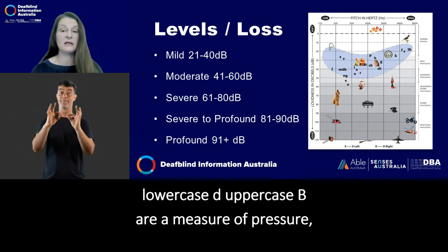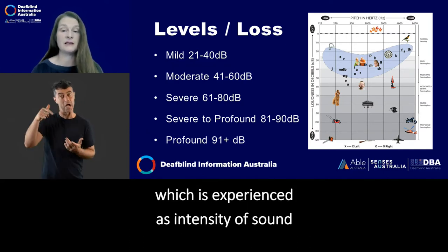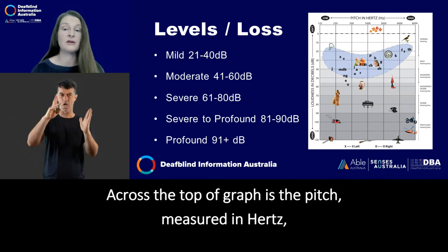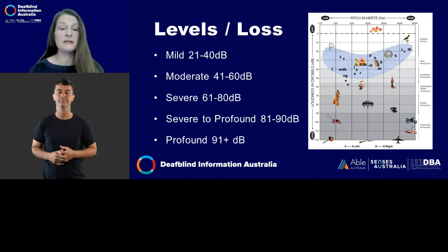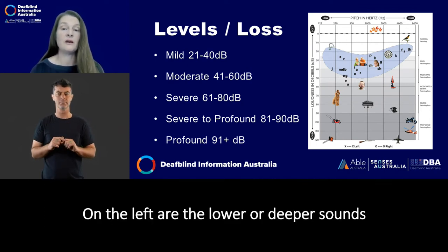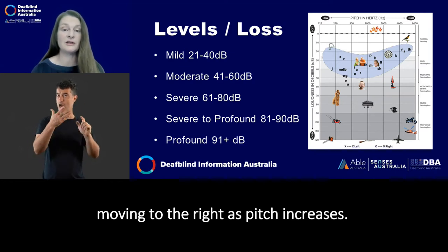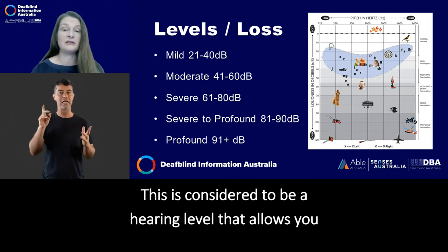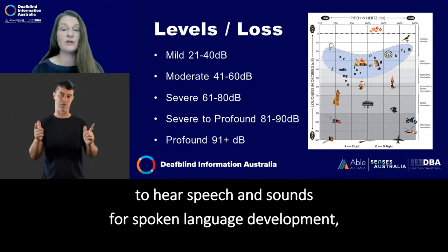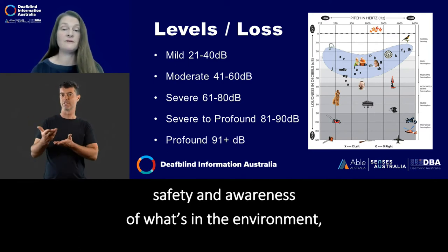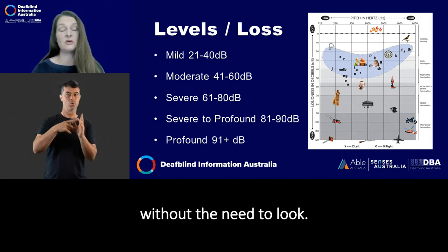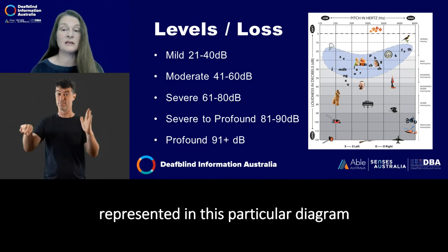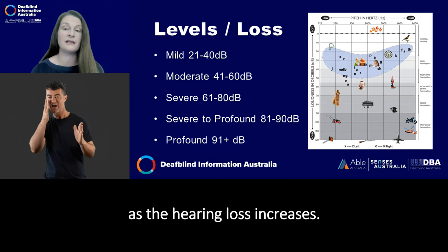Decibels, usually written as dB (lowercase d, uppercase B), are a measure of pressure, which is experienced as intensity of sound, or what we might call softness and loudness. Across the top of the graph is the pitch, measured in hertz, abbreviated to Hz. On the left are the lower or deeper sounds, moving to the right as pitch increases. The top band on this graph is white and represents the area of no hearing loss. This is considered to be a hearing level that allows you to hear speech and sounds for spoken language development — comfortable for conversation, safety and awareness of what's in the environment, without the need to look. As you move down the graph, you move into the regions of increasing levels of hearing loss, represented in this diagram by bands of light gray through darker grays as the hearing loss increases.